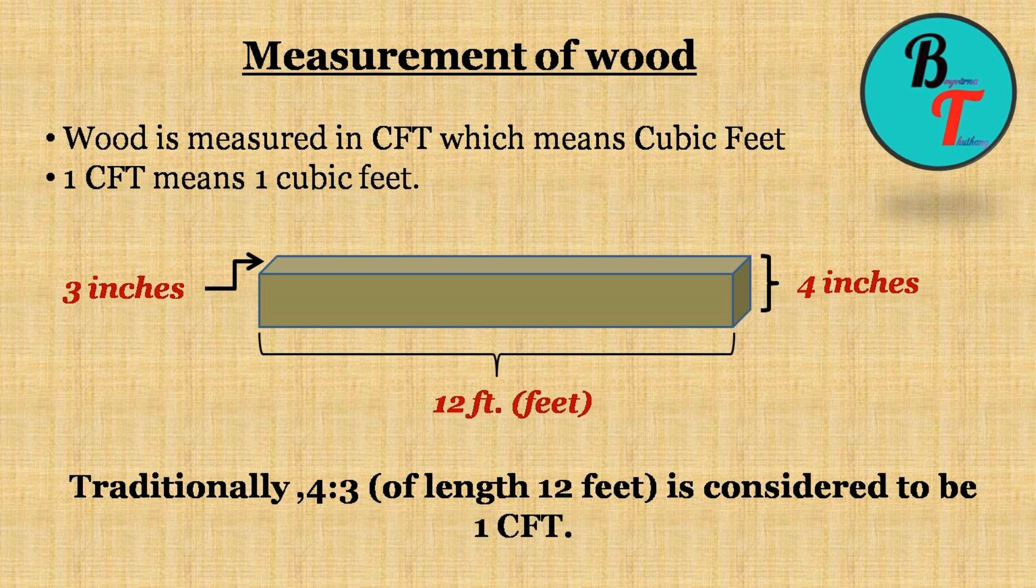Wood is measured in CFT, which means cubic feet. One CFT means one cubic feet. Some people memorize the value of one CFT as a piece of wood of length 12 feet, 4 inches height, and 3 inches breadth. This is actually not wrong for those who are not comfortable with the formula.